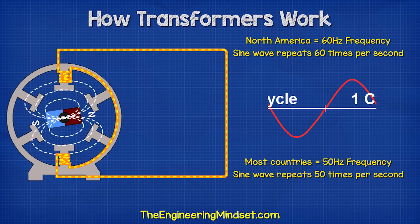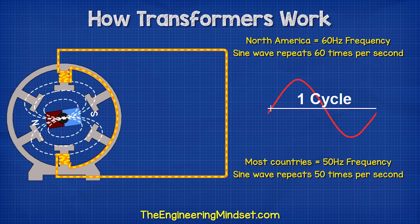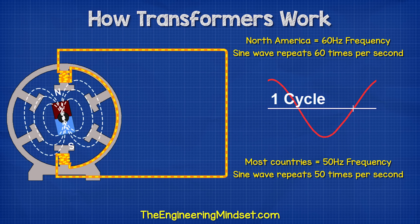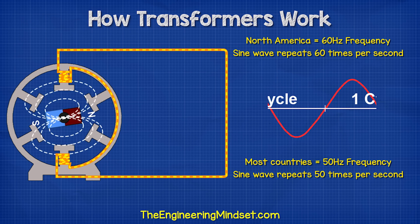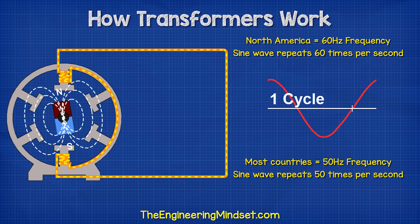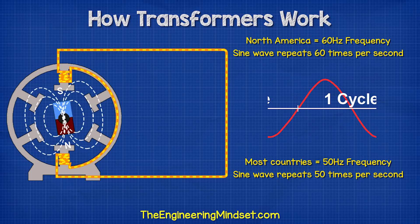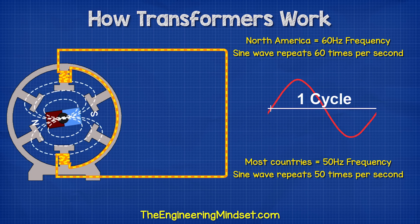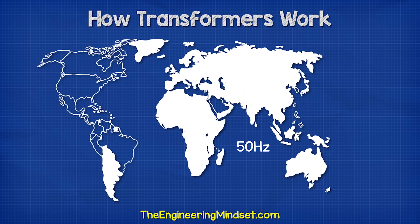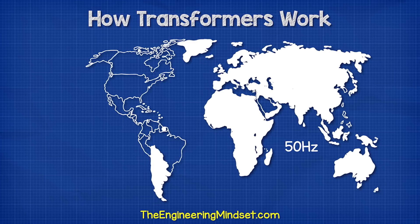This pattern repeats 50 or 60 times per second, depending on whether it's a 50 or 60 hertz supply. The AC frequency in North America is 60 hertz, but most of the world is just 50 hertz.